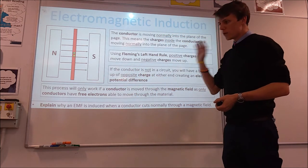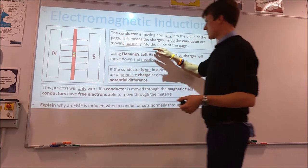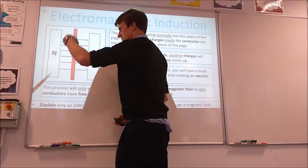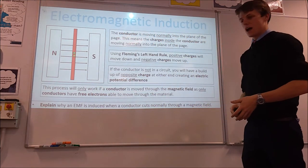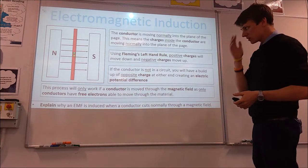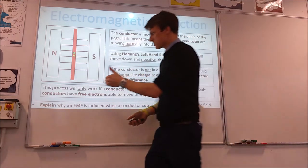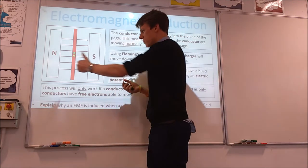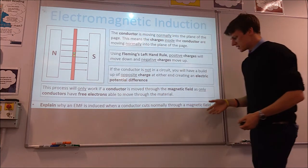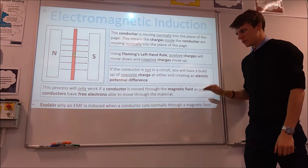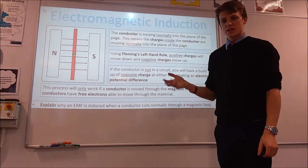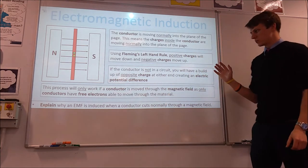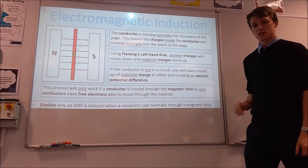What we've got here is a wire that is moving normally into the plane of the page — that means the conductor is going down into the page at right angles. So if the conductor is moving that way, all the charges inside the conductor also have to be moving that way. This only works if we're dealing with conductors, because we need charges to be free to move. If they're not free to move we don't get any of the principles we're going to talk about.